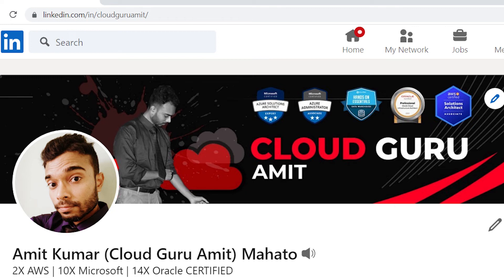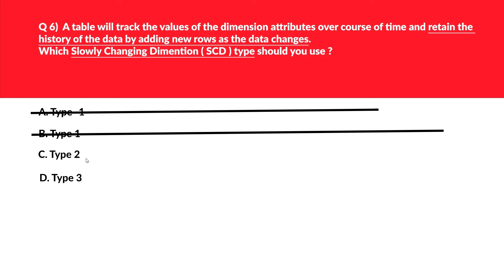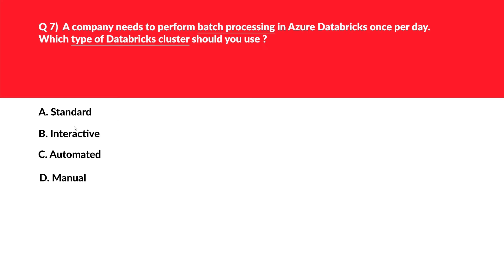Let's look at option C — type 2. SCD type 2 supports versioning of dimension members and preserves historical data by adding new rows. There's also a concept of surrogate keys which we'll cover in future questions. This is a potential answer, so we'll keep it. Option D — SCD type 3 — uses additional columns to track one key instance of history rather than adding rows to track each change, which is not required by the question. Hence it's incorrect, and we'll lock SCD type 2 as the correct answer.